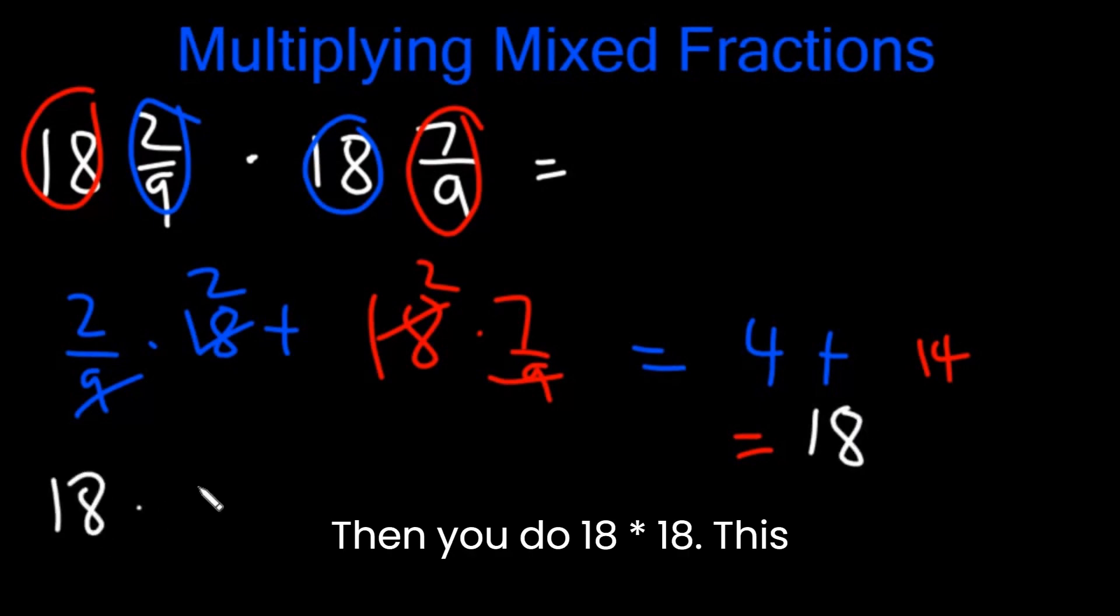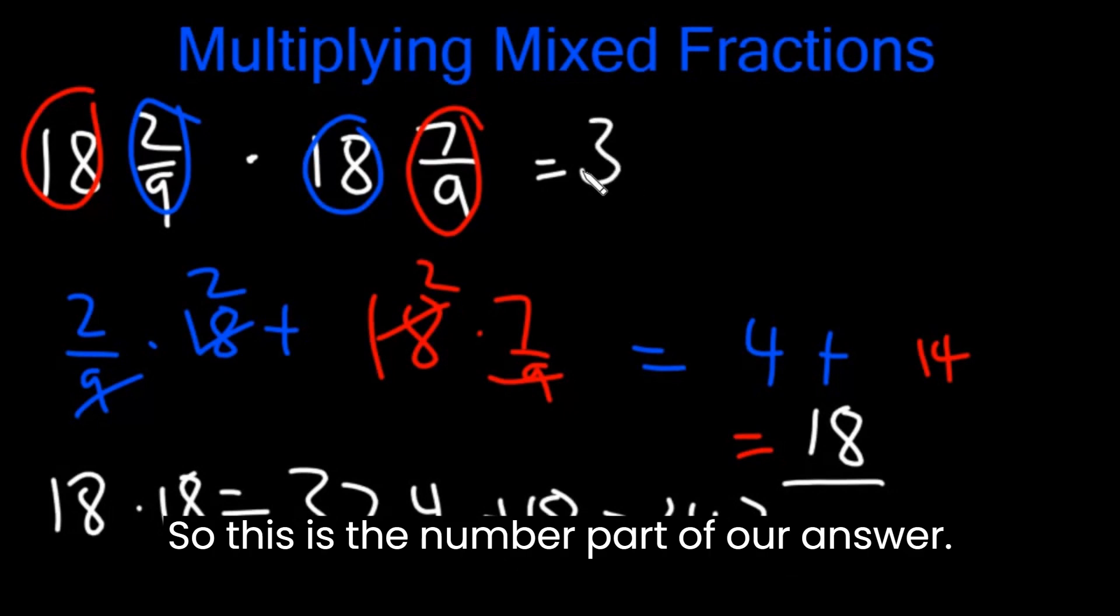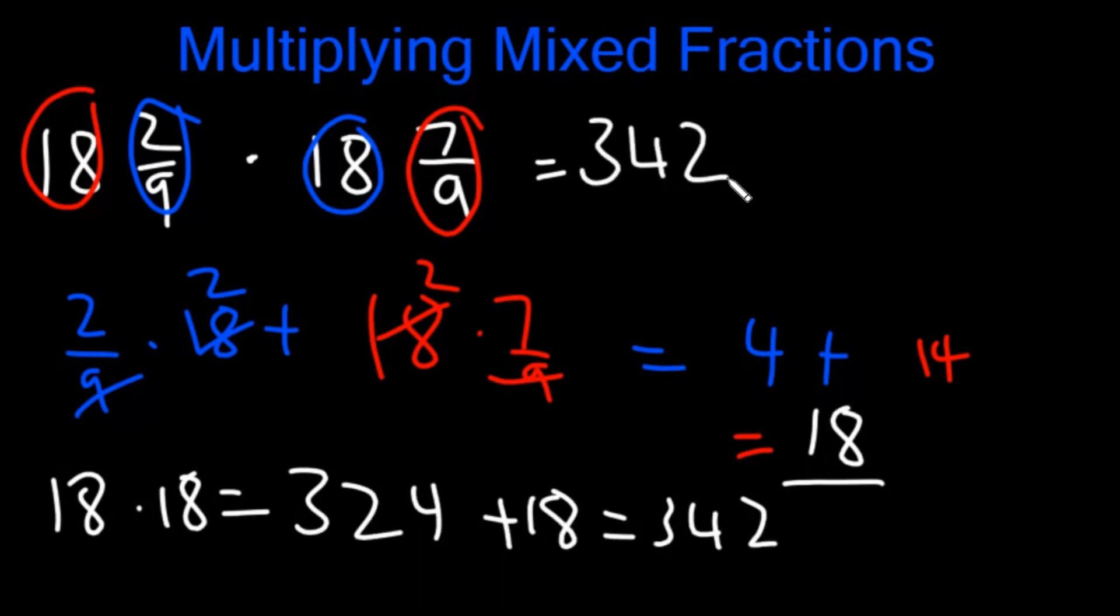Then you do 18 times 18. This is 324. And you'll add it with this. So this is 342. So this is the number part of our answer.